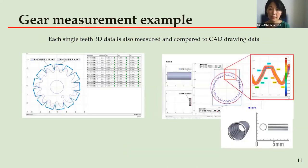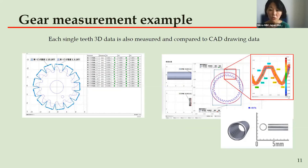Due to the fact that high-resolution 3D measurement data consists of millions of point location information, each single-tooth evaluation is capable. The gear specifications such as module, pitch, pressure angle, tooth depth, and their errors or deviations will be shown in a dataset. Also, gears that are designed with special curves, for example involute gear or helical gear, those curves will be analyzed by our measurement specialists.